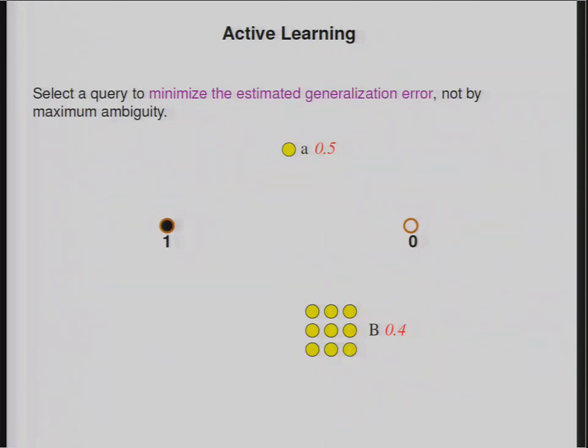That seems silly, because if I select this point A, all I'm going to do is learn the label of A. Whereas if I select almost any of these points, like for example the middle point in this cluster B, not only do I get to know the label for B, but I'm going to have a good guess for all of the other labels in that cluster.